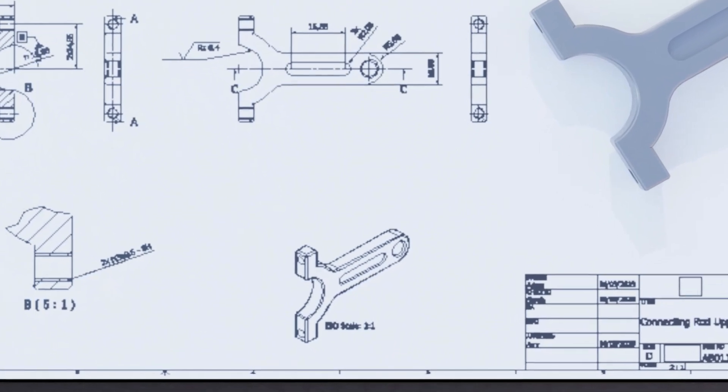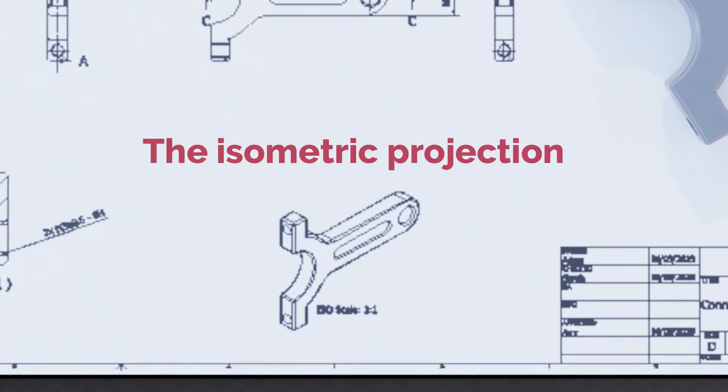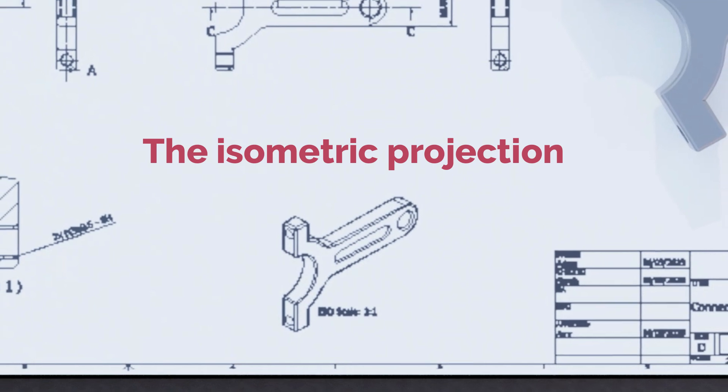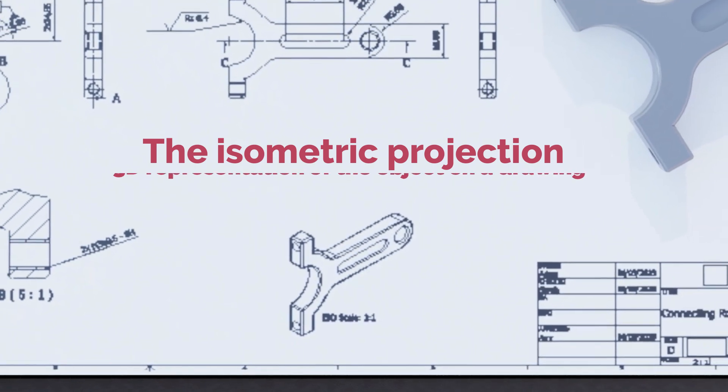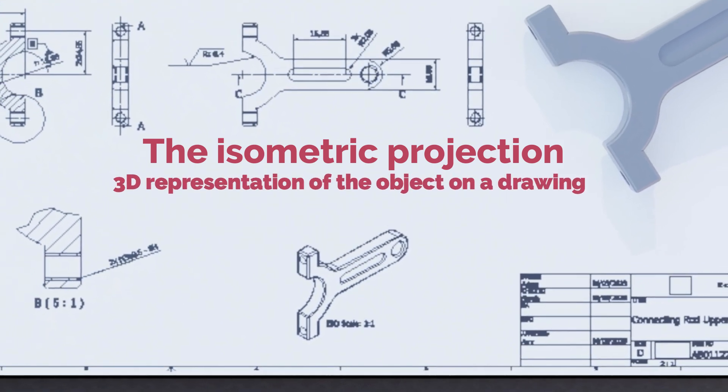Let's start with the isometric projection. Don't get scared by the word isometric. Isometric projection is just a fancy word for a 3D representation of the object on a drawing.